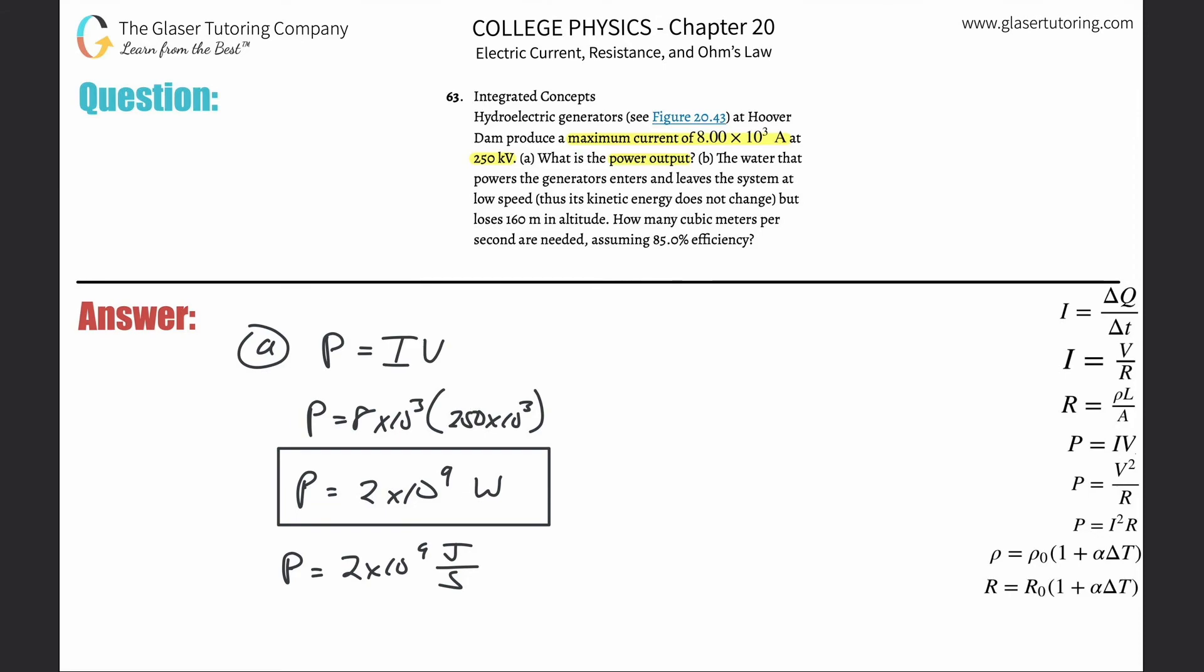Letter B: the water that powers the generators enters and leaves the system at low speed, so kinetic energy doesn't change, but it loses 160 meters in altitude. Sounds like a changing potential energy. How many cubic meters per second are needed assuming an 85% efficiency?